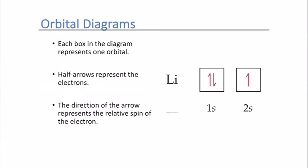Let's look at an example of an orbital diagram, starting with lithium. Lithium has three electrons. We fill up from lowest energy to highest — the 1s is the lowest, which is the ground state. We put two electrons into the 1s orbital with one arrow pointing up and one pointing down. Then we use the 2s orbital, and since lithium has only three electrons, we draw just one arrow. It doesn't matter if it points up or down. This is an orbital diagram for lithium.